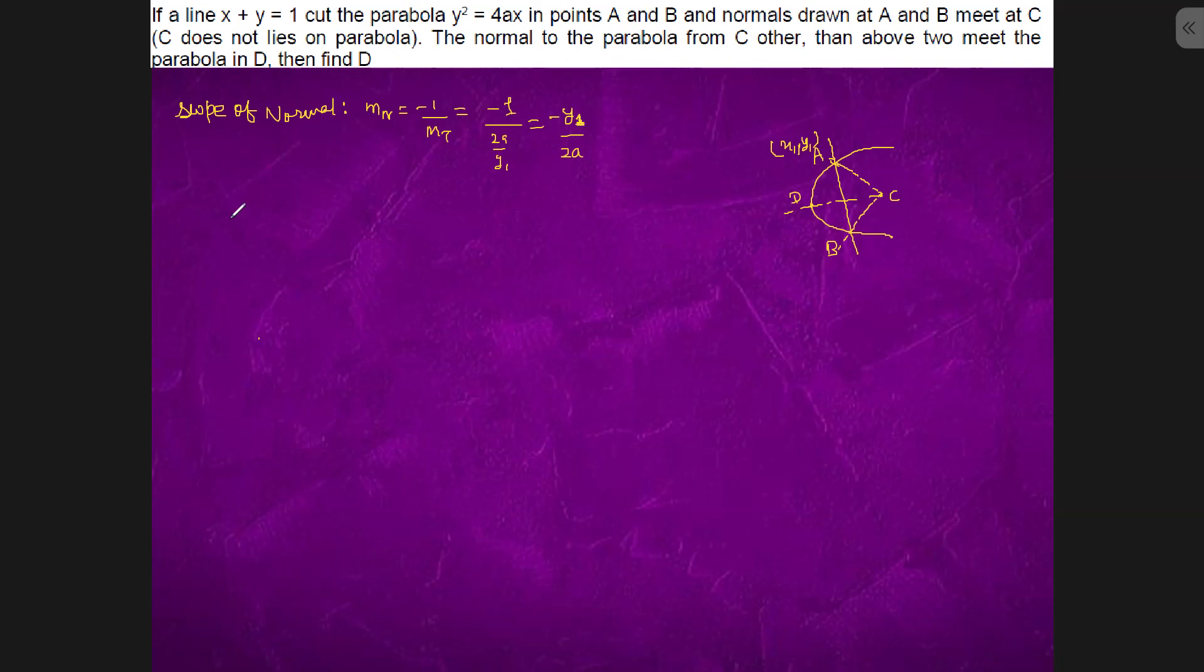Now second, equation of normal slope form is y equals to mx minus 2am minus am³. We will consider that point C is h comma k. So this will pass through h comma k. I think we agree.